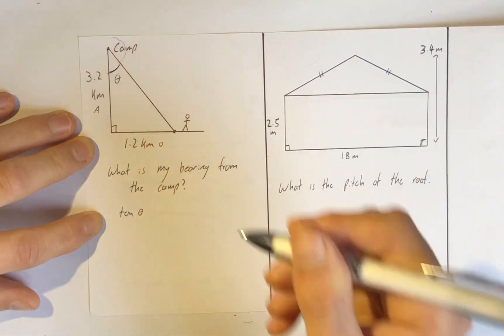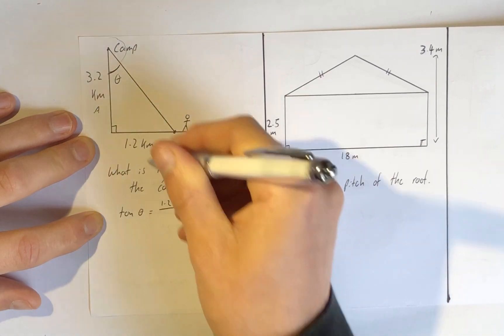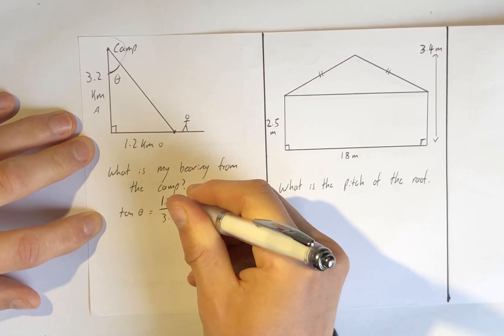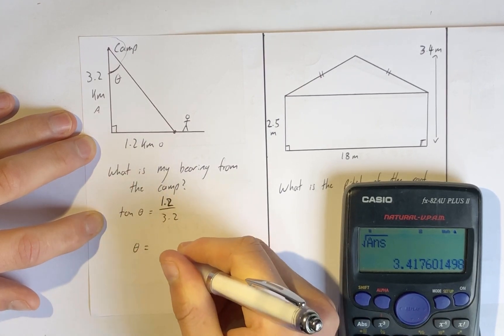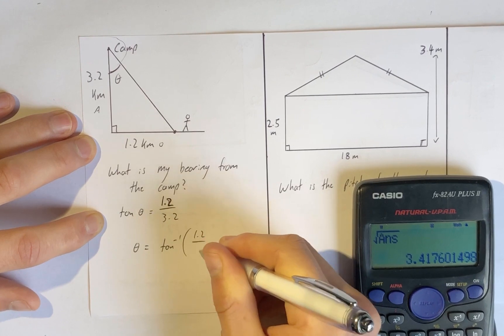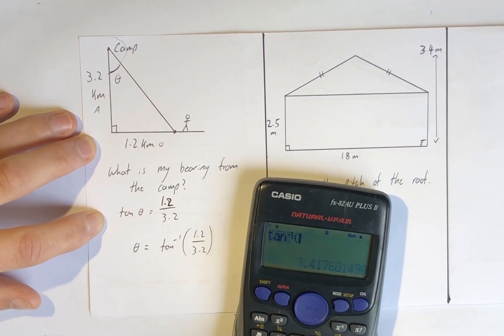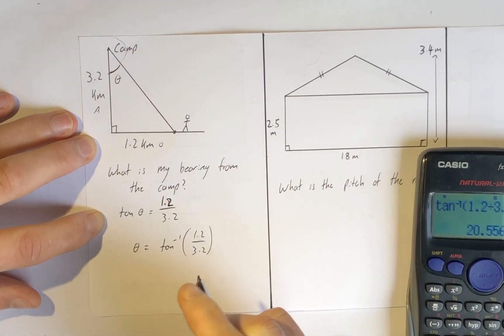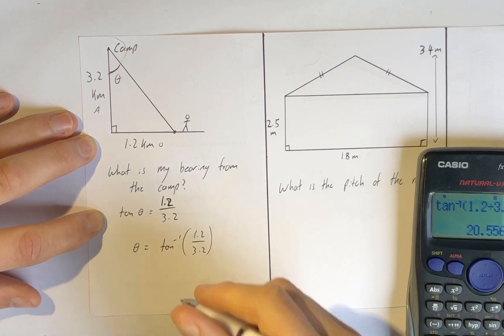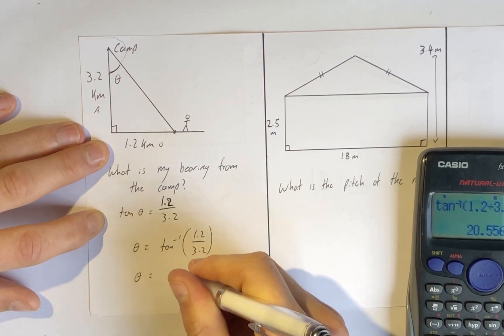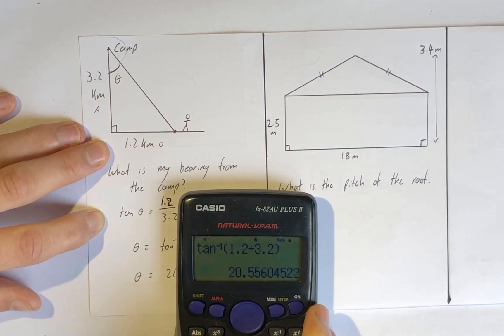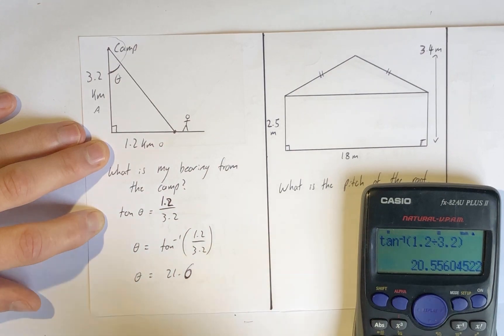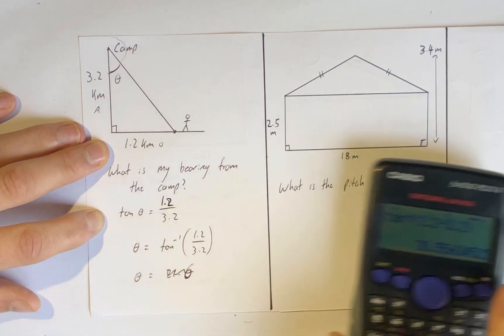Let's find this angle. I've got A and O so it's tangent. I take tan of this unknown angle theta and that equals O over A, 1.2 over 3.2. What I need is theta, and that's when I take the tan inverse of that fraction. Shift tan and then in brackets that division. There it is: theta is 20.6 degrees.